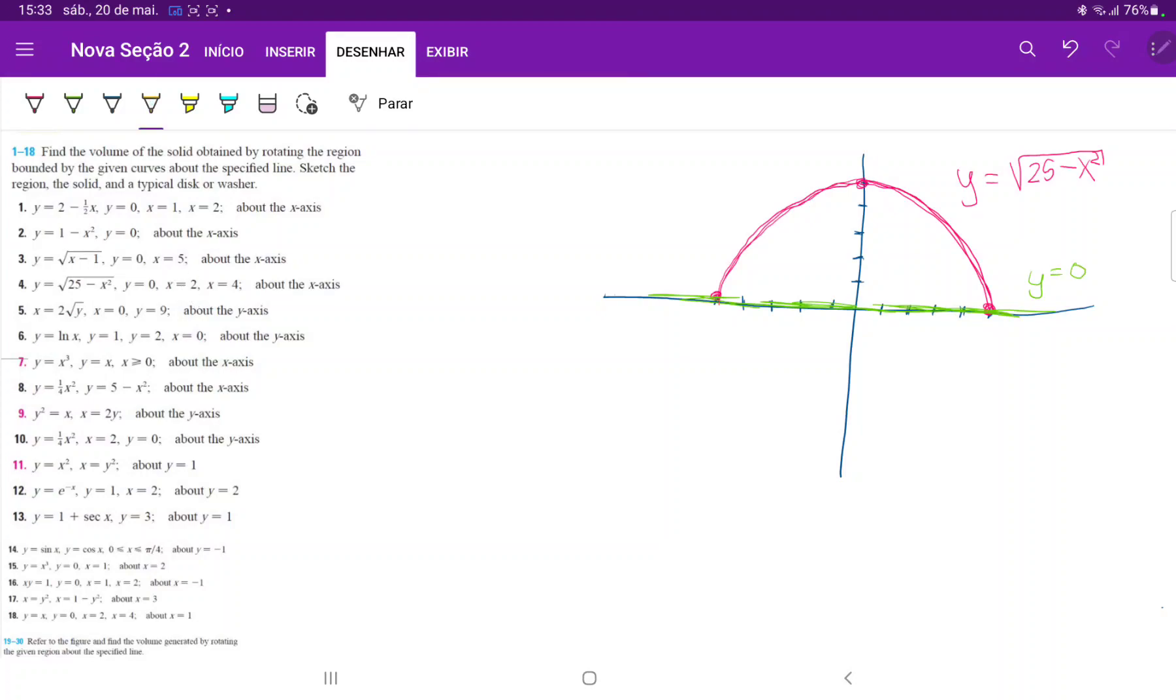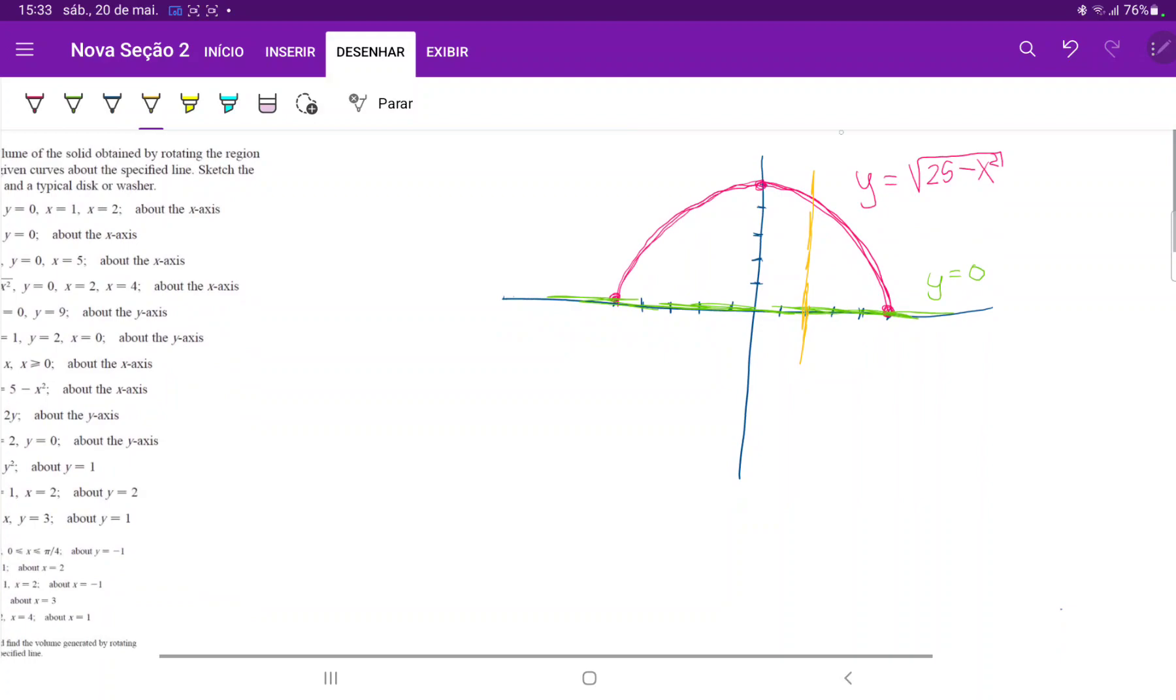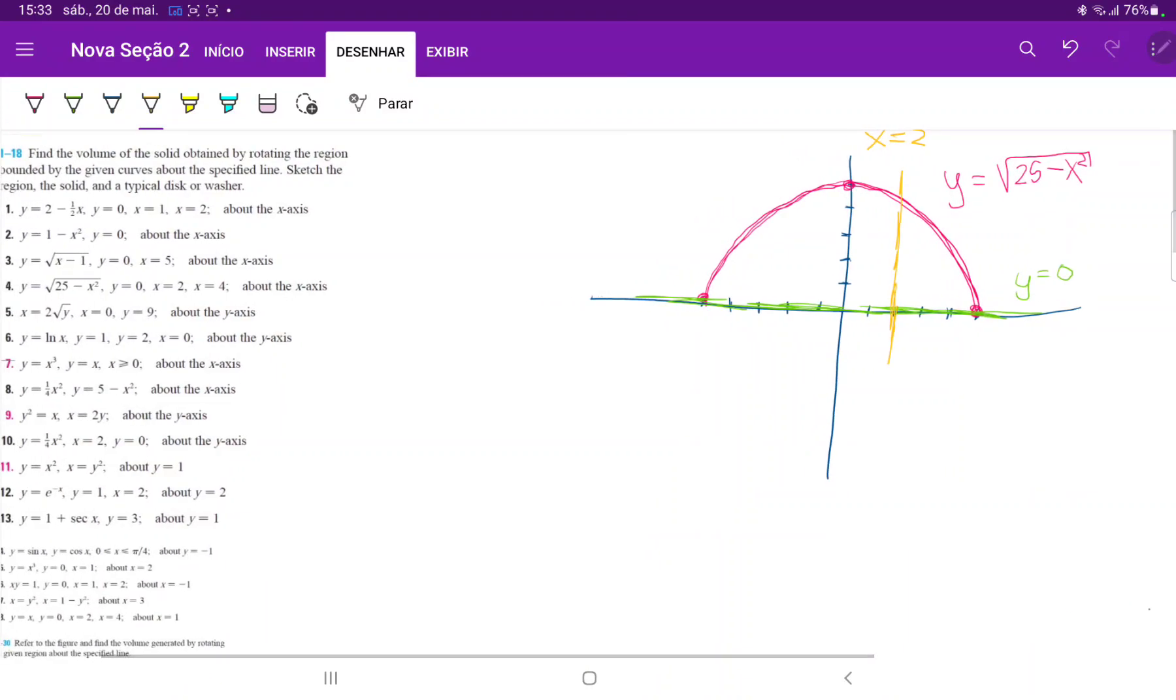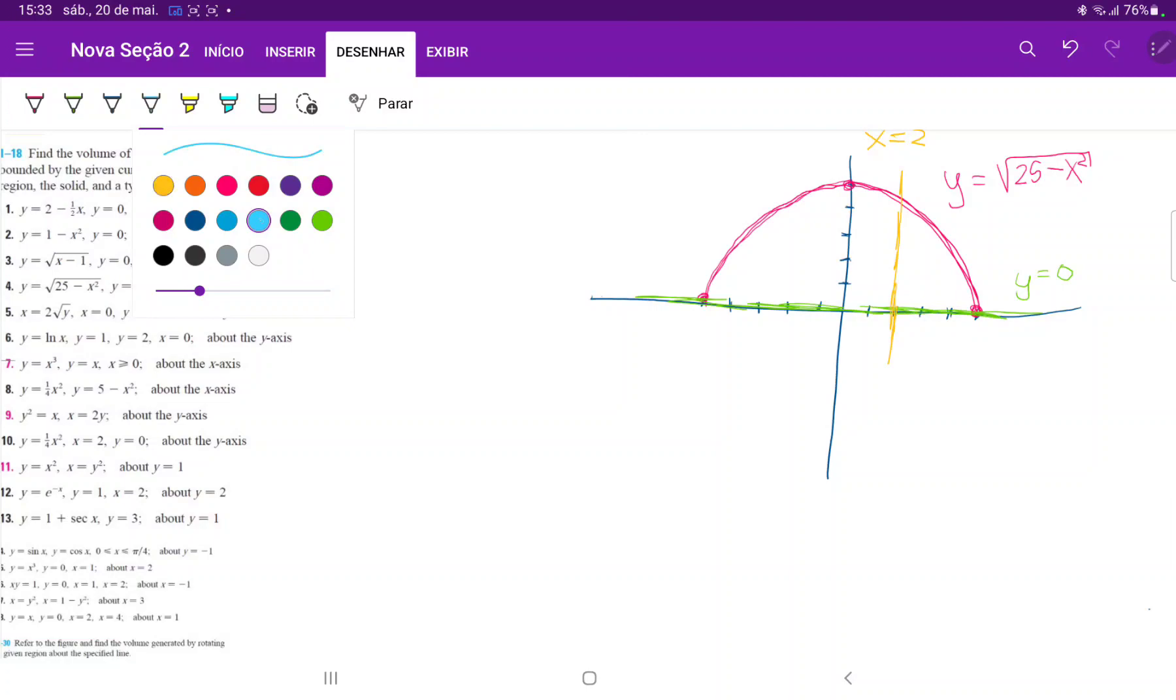What else do we have? We have x is equal to 2 and x is equal to 4. So over here, this is x equals 2. And lastly, we have x is equal to 4. Over here, this is x equals 4. So we can see that it does form an area bounded between them, right? Which is this area over here.